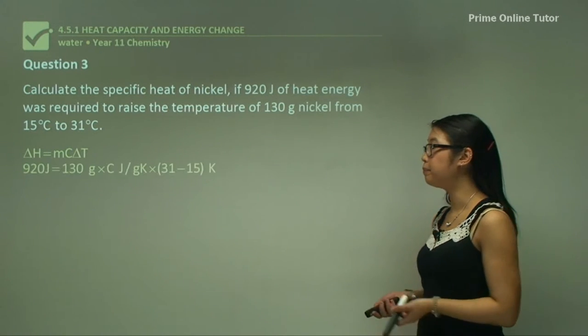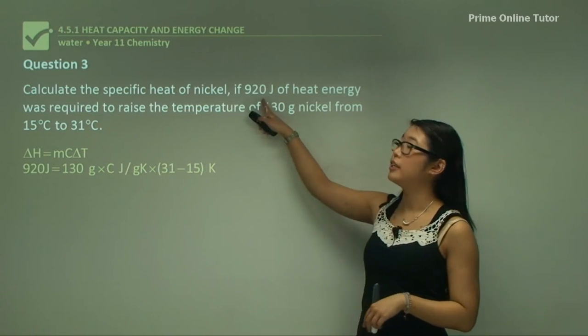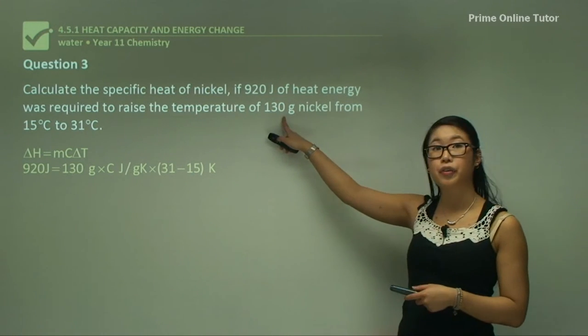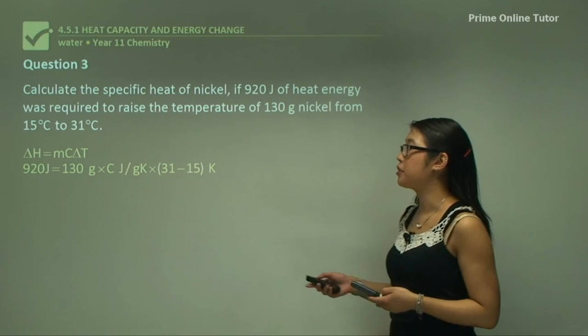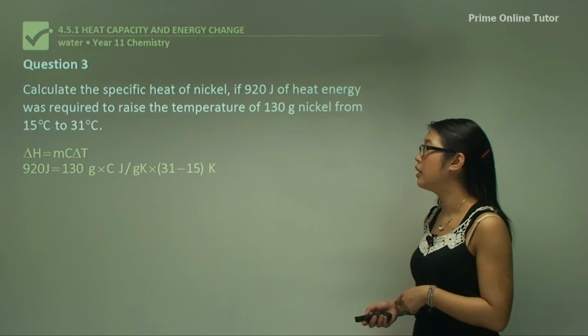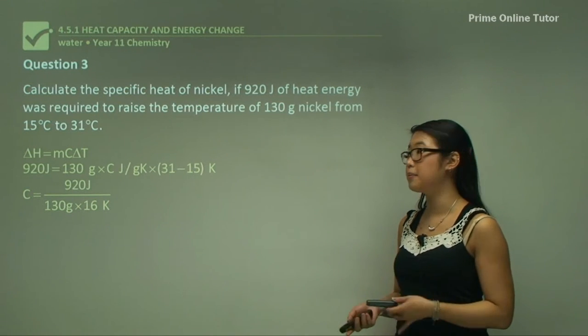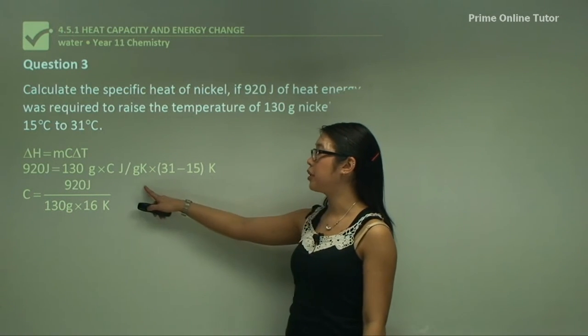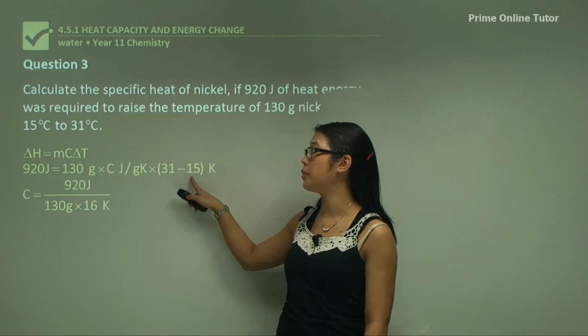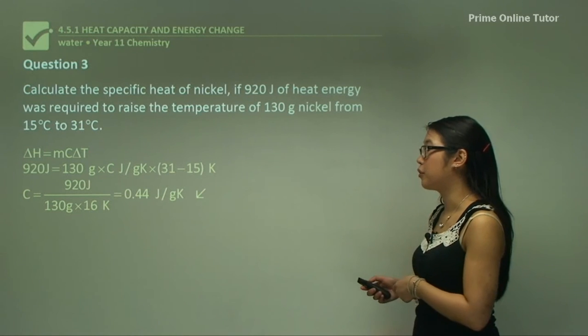We use the equation again. The amount of energy we put in to change the enthalpy was 920, so we put that as ΔH. The mass was given as 130 grams. The change in temperature is 31 minus 15. We make C the subject because we're looking for specific heat capacity. So 920 joules divided by the mass 130 grams times the temperature change 16 Kelvin gives us 0.44 joules per gram Kelvin.